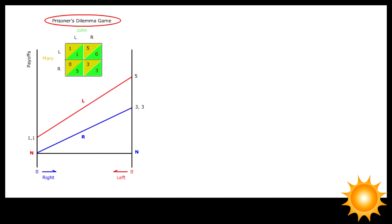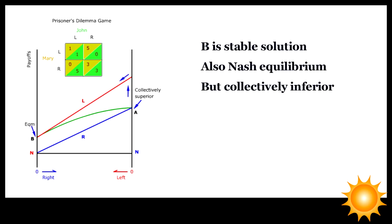Although the collectively superior solution still occurs at A, where everybody chooses R, as indicated by the green collective payoff curve, A is no longer a stable solution. The higher payoffs from option L offer constant temptation to defect from R. This defection will continue until everybody chooses L at B — a stable but collectively inferior solution. The situation of cheating comes to mind: people are collectively better off when most don't cheat, but the few individuals who cheat are even better off if they can get away with it. People are collectively worse off when most routinely cheat, and there is no self-correcting mechanism to get out of an entrenched cheating culture.